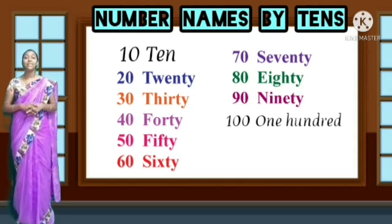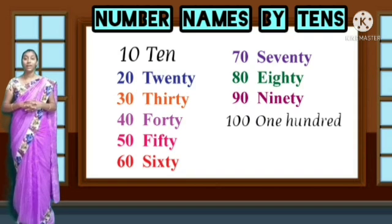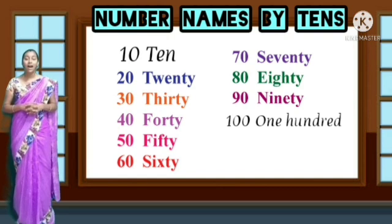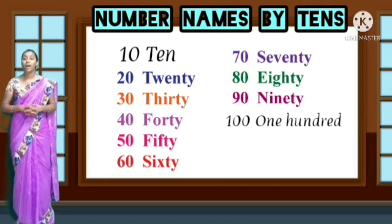And the last one is 100 — one, zero, zero. What is the name of this number? It is one hundred. O-N-E H-U-N-D-R-E-D, one hundred. 1-0-0, one hundred.